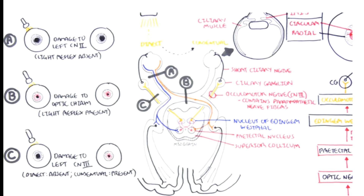In the second scenario, with damage at the level of the optic chiasma: the nasal fibers cross to the other side at the chiasma, but temporal fibers continue along the same path. When there is damage at the optic chiasma, the nasal fibers are affected but temporal fibers remain intact. Impulses from the eye continue to flow through the temporal fibers, reach the midbrain, and produce a response. Hence the light reflex will be present — direct reflex in the same eye and consensual reflex in the other eye.